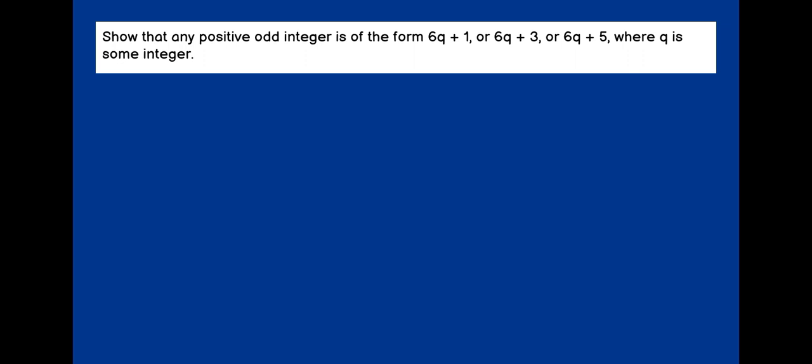Let's solve a similar type of question here. Show that any positive odd integer is in the form of 6Q plus 1 or 6Q plus 3 or 6Q plus 5, where Q is some integer. Here they have given us that B is equal to 6. So therefore, remainder can be either 0 or 1 or 2 or 3 till 5. It cannot go more than 5.